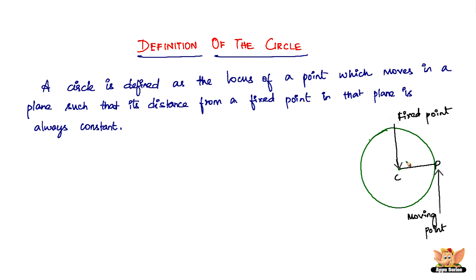CP is called the radius wherever point P moves. If point P comes here, this will also be called the radius. So, to read the definition again: the circle is defined as the locus of a point which moves in such a way that its distance from a fixed point in that plane is always a constant, and that constant distance is called the radius of the circle.